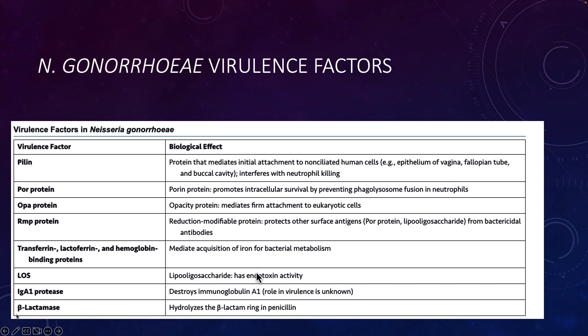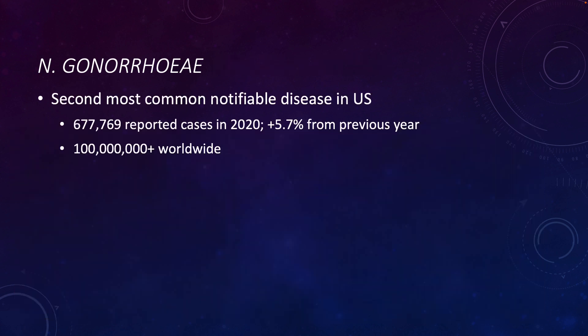So this is a pretty nasty pathogen, and one of the highlights is that it has LOS instead of LPS. Gonorrhea is the second most common notifiable disease in the U.S. — we'll talk about the first later. There were over 675,000 reported cases in 2020, up from 2019, and it's estimated that there are over 100 million cases per year worldwide.